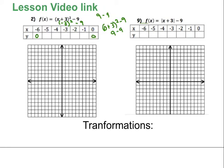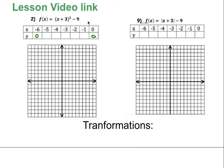I have points that repeat each other because this is symmetrical — this is a parabola. So the next point: if I put in negative 5, negative 5 plus 3 squared minus 9, well negative 5 plus 3 is negative 2 squared minus 9. Negative 2 squared is 4, and 4 minus 9 is negative 5.